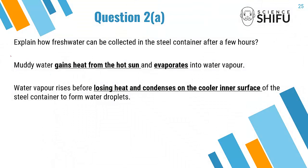Re-paraphrasing into the full answer: 'Muddy water gains heat from the hot sun and evaporates into water vapor. The water vapor rises before losing heat and condenses on the cooler inner surface of the steel container to form water droplets.' The surface must be cooler because for water vapor to condense, it requires a surface at a lower temperature than the water vapor.